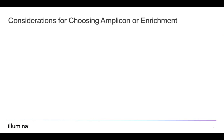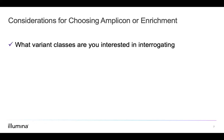There are key considerations for choosing amplicon or enrichment in your targeted resequencing experiment. Variant classes should be the number one consideration — certain variant classes are better defined using one technology over the other, such as copy number variation and low-frequency somatic variations. A second consideration is where your nucleic acid is coming from and how much you can obtain. You may be working with a whole blood sample yielding sufficient DNA or RNA, or with a small formalin-fixed paraffin-embedded sample where only a very limited amount of nucleic acid is available.